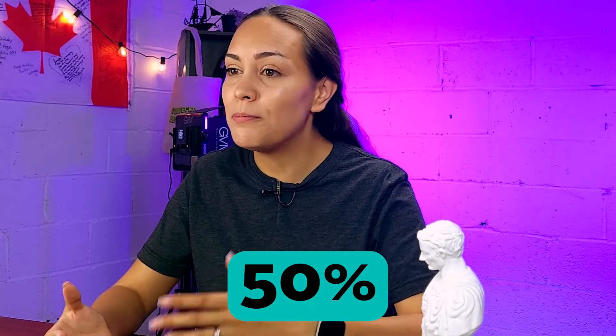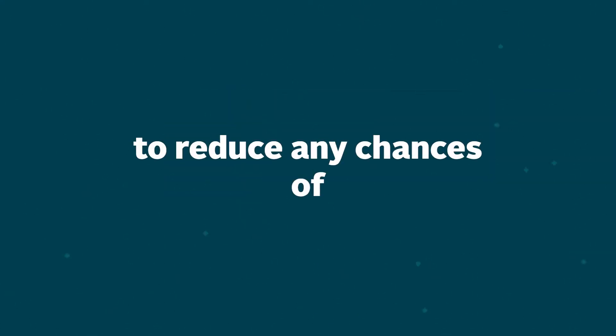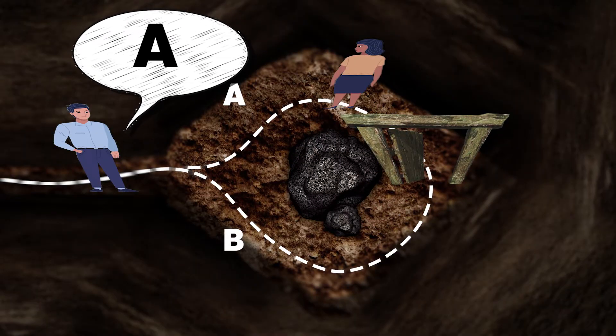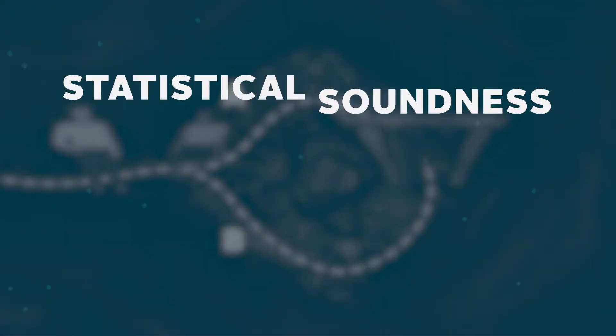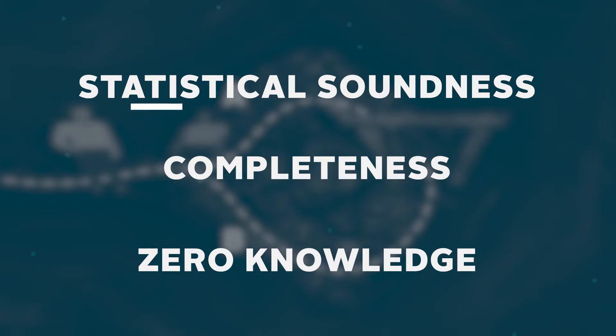You enter at random through one of the entrances while Jerry waits outside to tell you which path to exit through. If you really had the code, you would be able to exit through the path that Jerry wants every single time by using the door. But mathematically, you would have a 50% chance of picking the right entrance and path from the get-go. The best thing is to run the test again and again to reduce any chances of luck involved. From this example, you're able to use the same proofs to verify that you have the code by opening the door and coming out through Jerry's requested path multiple times. Your proof system aims to achieve statistical soundness, completeness, and most importantly, zero knowledge — the three main criteria that a zero-knowledge proof method must satisfy.